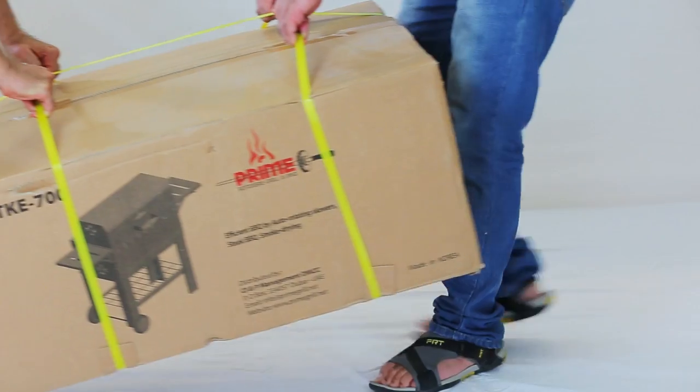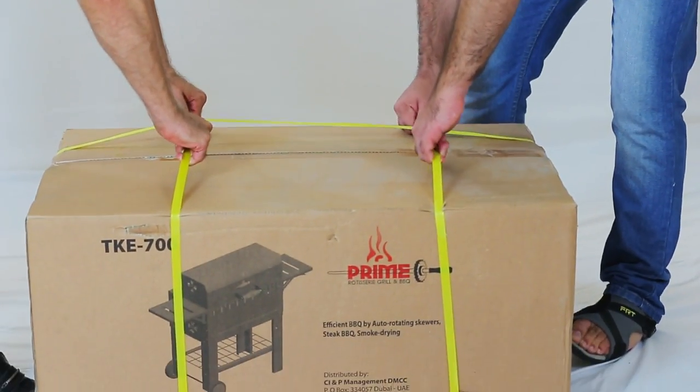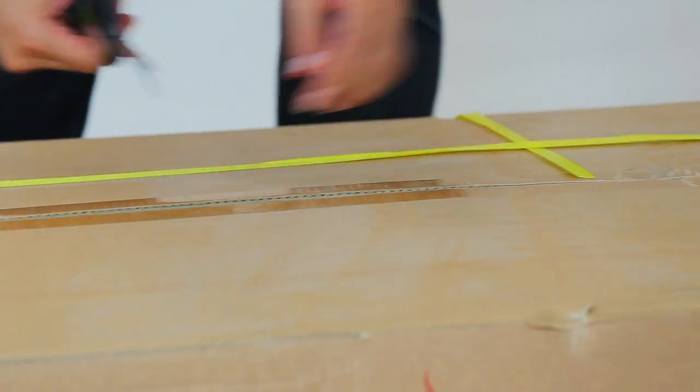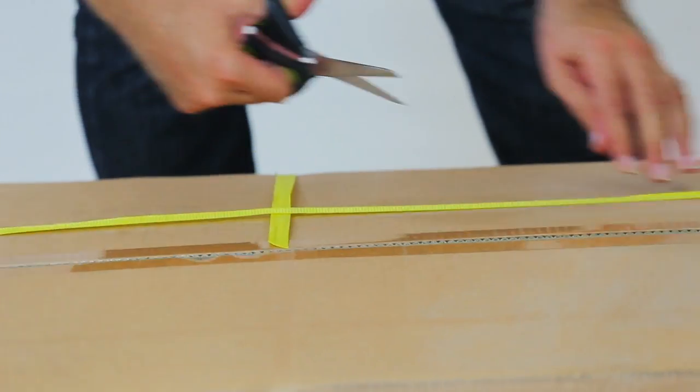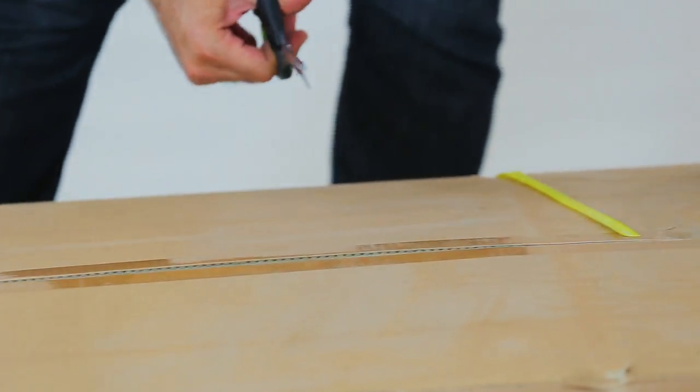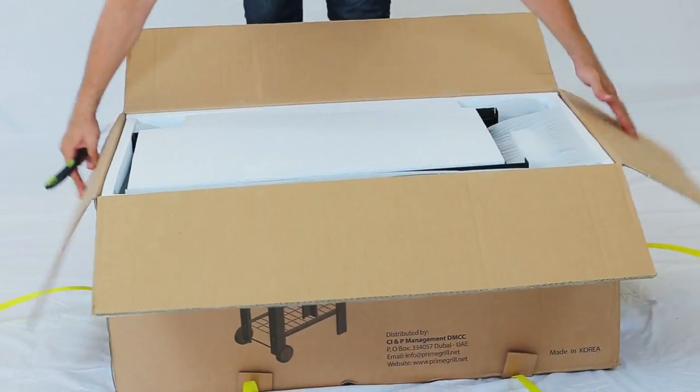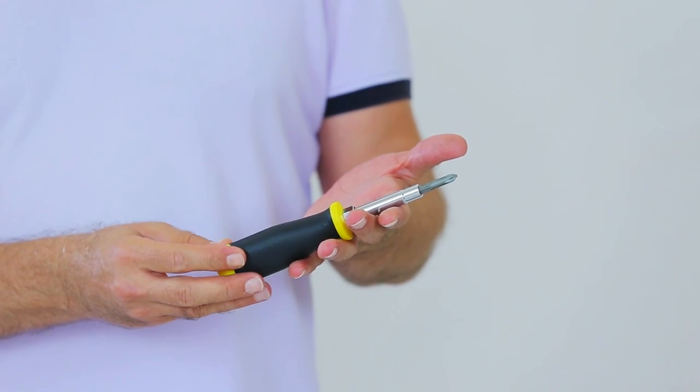We also recommend that you have a partner to assist you as the grill is a bit heavy. Please assemble on a soft flooring material to avoid scratches and other damages to the product. All the loose parts needed are provided in your box. The only thing you need is a Phillips screwdriver.